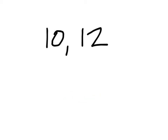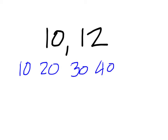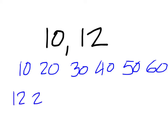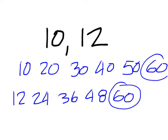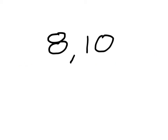For 10 and 12: 10, 20, 30, 40, 50, 60 — does 12 go into any of those numbers? 60 — yes, because 12, 24, 36, 48, 60. So the least common denominator is 60. For 8 and 10: the lowest number they both go into — 40 is right.